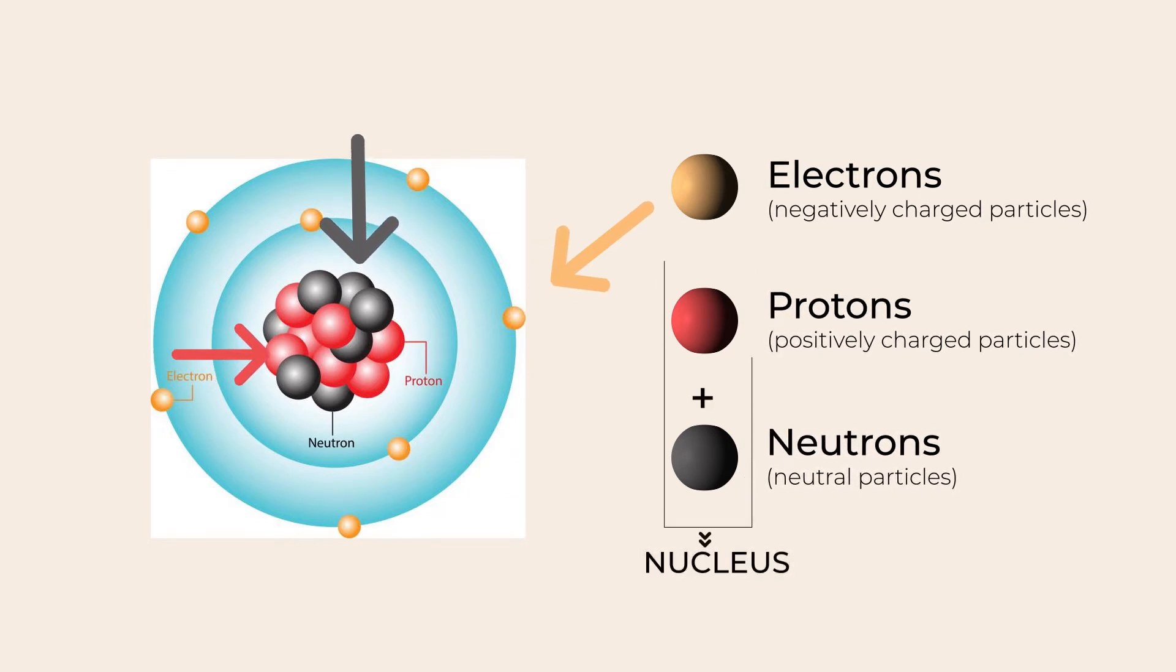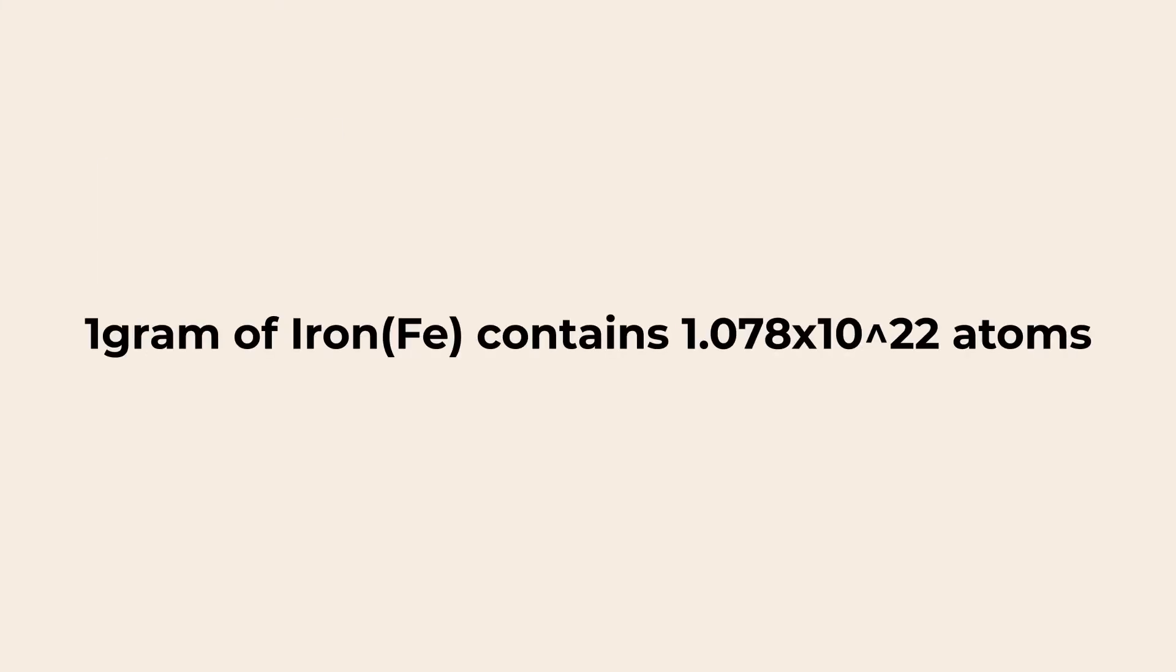Protons and neutrons are located at the center of the atom and electrons are found at the periphery. Electrons are negatively charged and protons are positively charged, whereas neutrons don't have any charge. A gram of any material contains a large number of atoms.